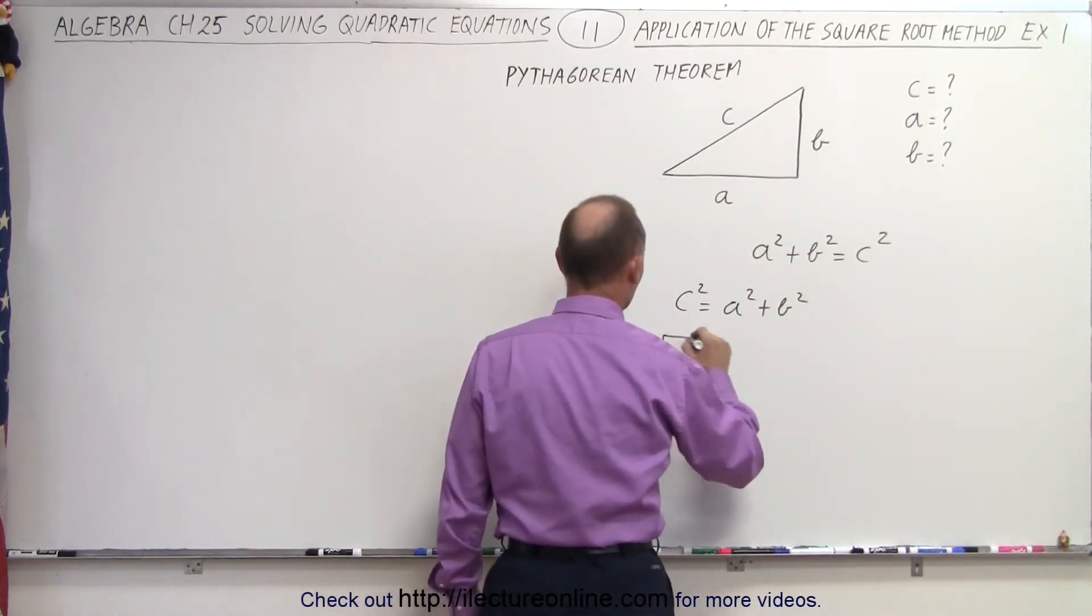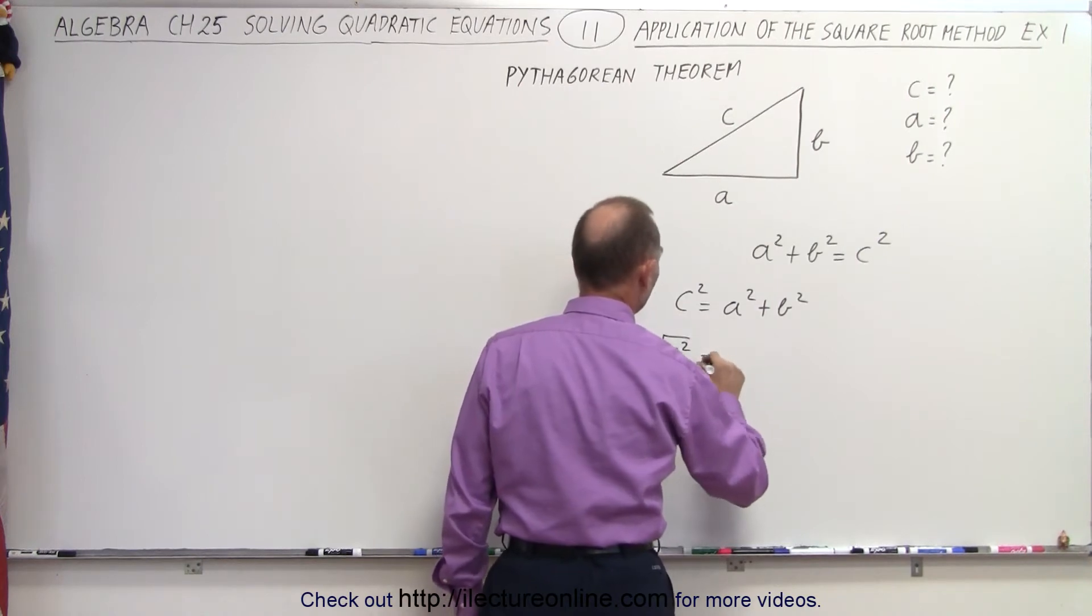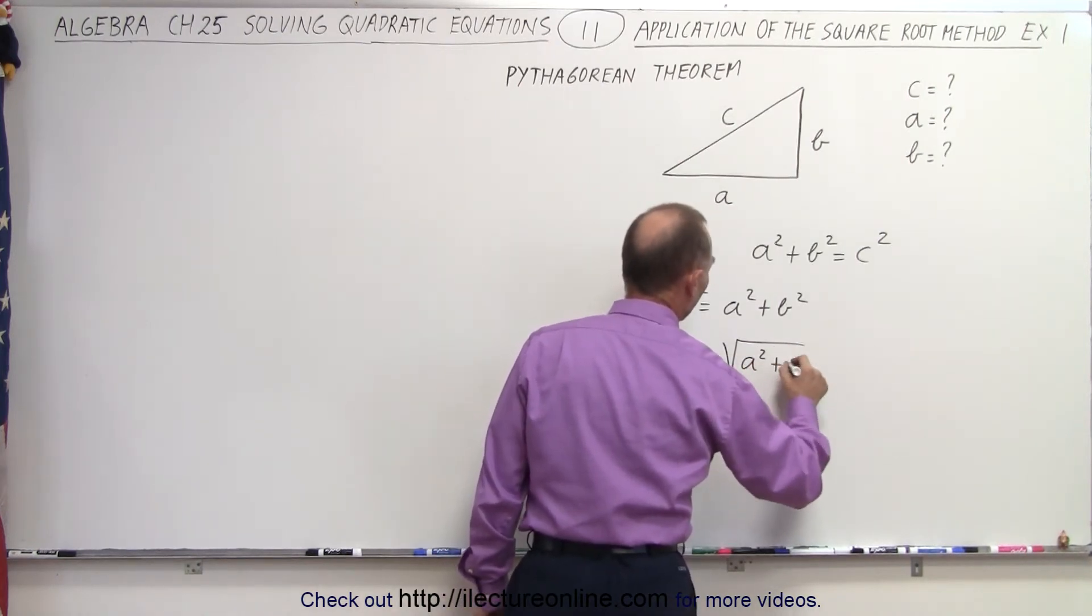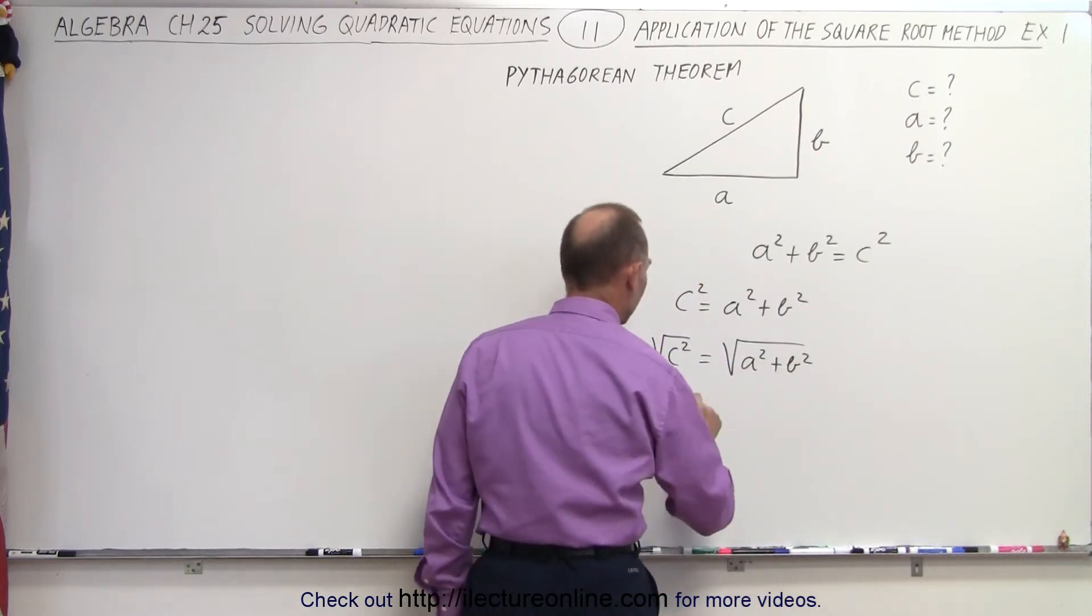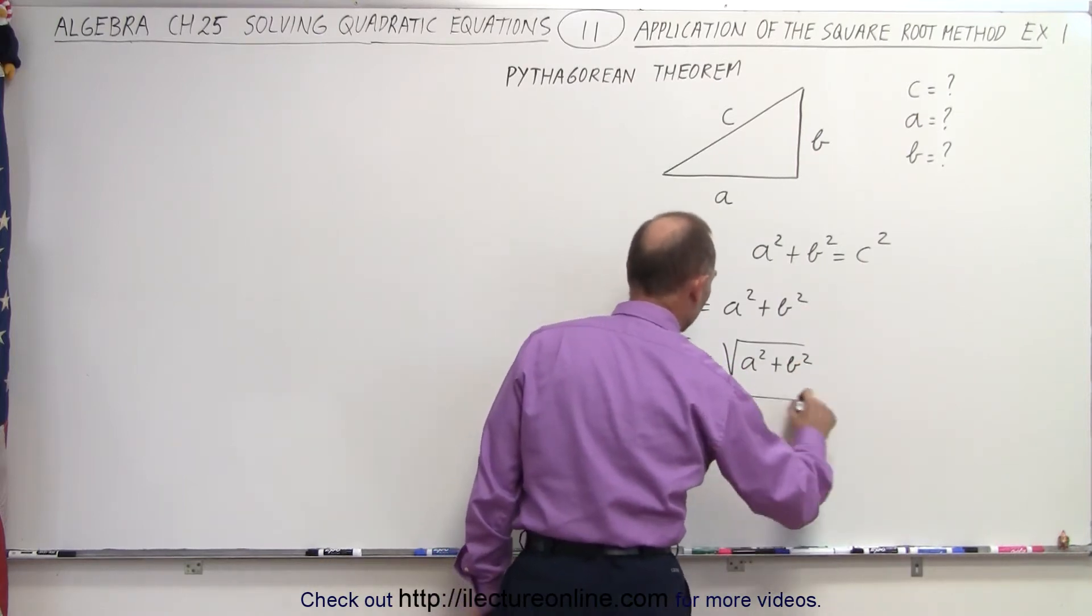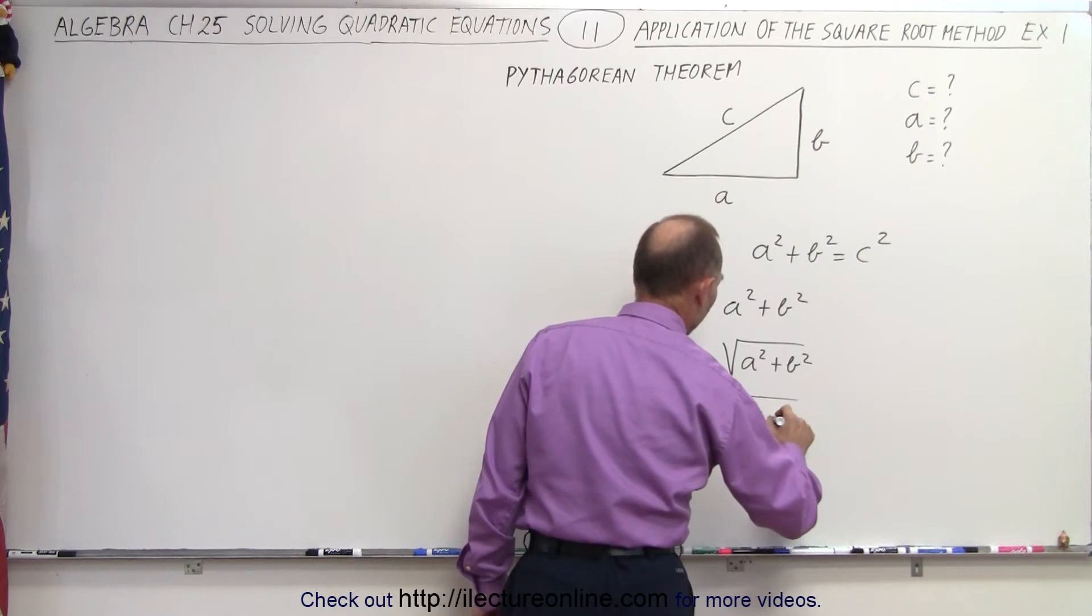So when we take the square root of the left side, we get the square root of c squared is equal to the square root of a squared plus b squared. That means that c equals the square root of a squared plus b squared.